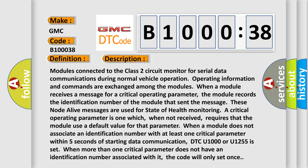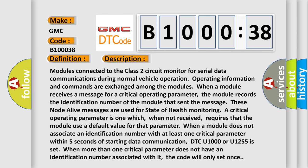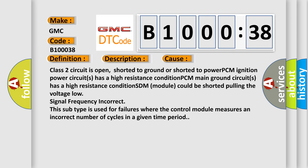This diagnostic error occurs most often in these cases: Class 2 circuit is open, shorted to ground, or shorted to power. PCM ignition power circuits has a high resistance condition. PCM main ground circuits has a high resistance condition. SDM module could be shorted, pulling the voltage low.